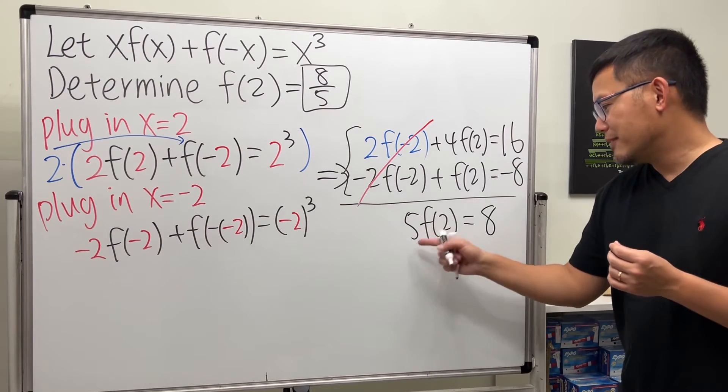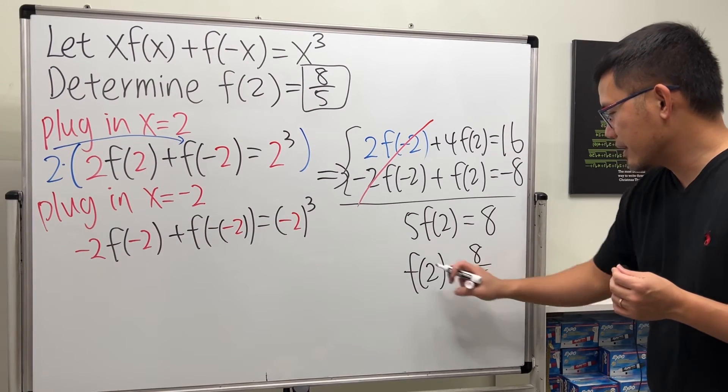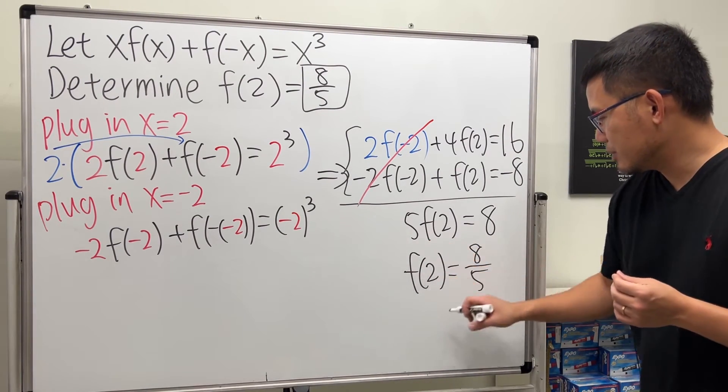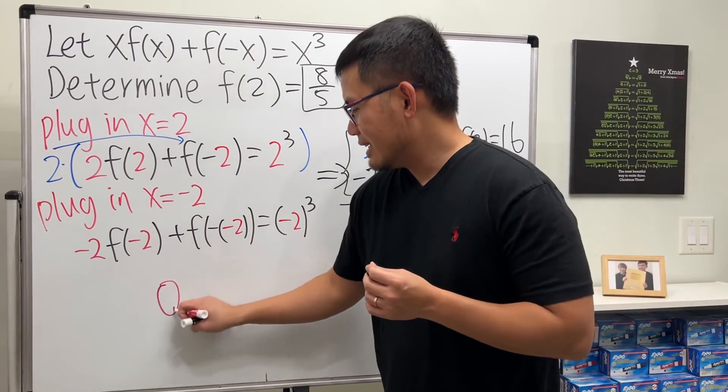So finally, divide 5 on both sides. f(2) is nicely equal to 8/5, and that's it. Let me just box this right here. Yeah, that's it.